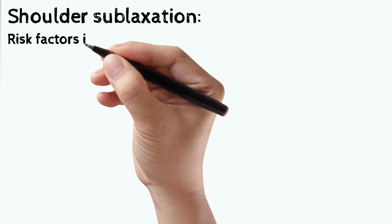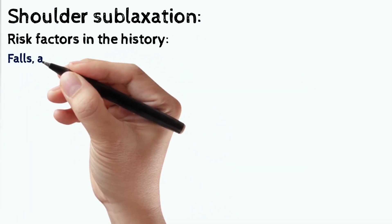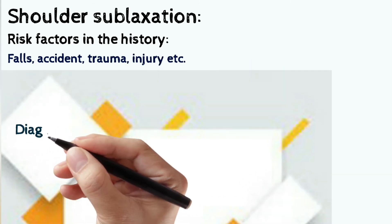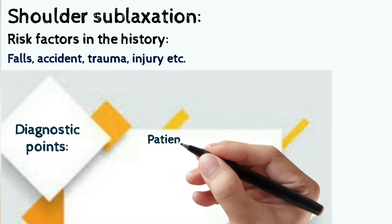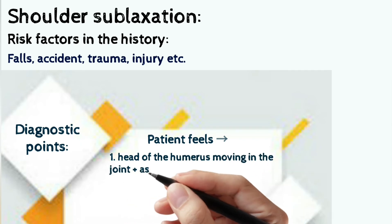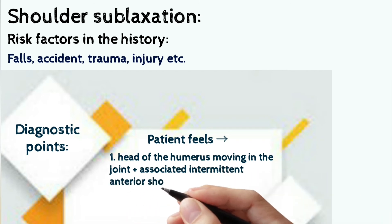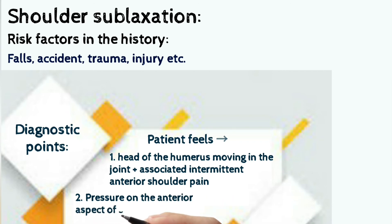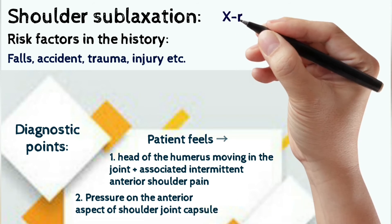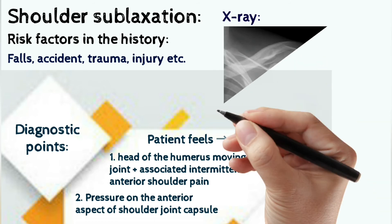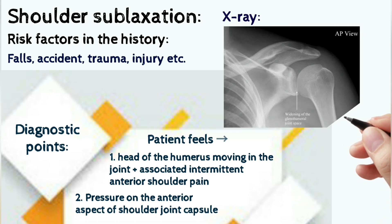Shoulder subluxation — risk factors in the history include falls, accidents, trauma, and injury. Diagnostic key points: the patient feels the head of the humerus moving in the joint, with intermittent anterior shoulder pain, and pressure on the anterior aspect of the shoulder is also felt. On x-ray we can see the inferior subluxation of the head of the humerus.